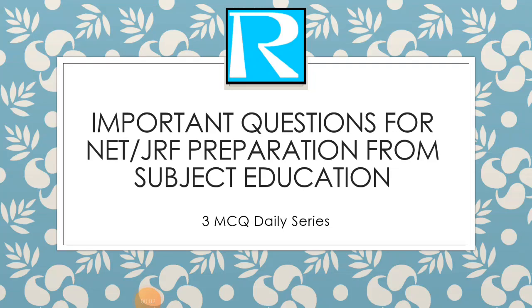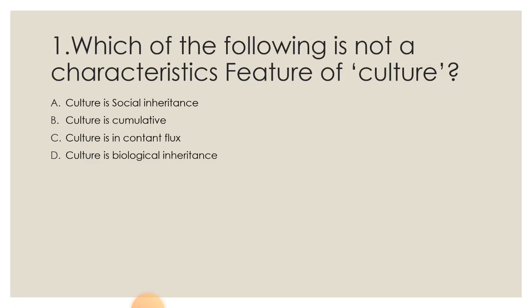Hello friends, here I am providing you important questions for NET/JRF preparation from subject education. I am providing you three MCQs daily. So the first question is, which of the following is not a characteristic feature of culture? A: culture is social inheritance, B: culture is cumulative, C: culture is in constant flux, and D: culture is biological inheritance.